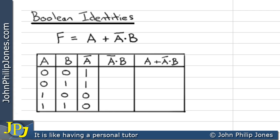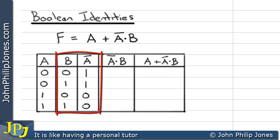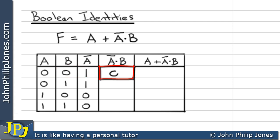Now we need to look at the NOT A AND B column, which is the ANDing together of those two columns. When B is 0 and NOT A is 1, ANDing those together gives 0. In the next row, B is 1 and NOT A is 1, and ANDing two 1s gives 1.